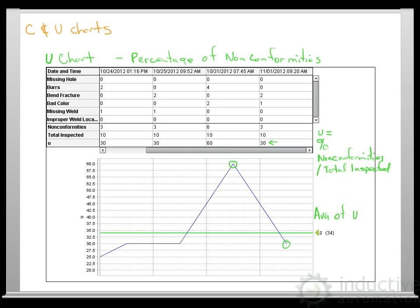Just to recap: C chart is good when your total inspected per sample is always the same. And our U chart is good when the total inspected varies.